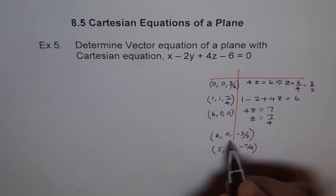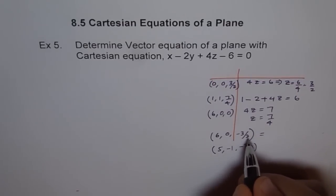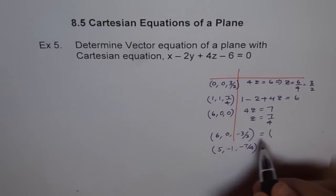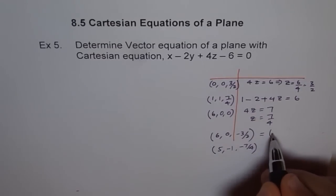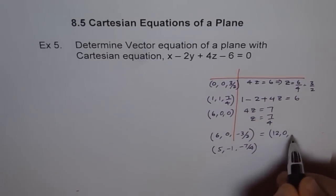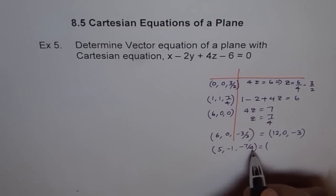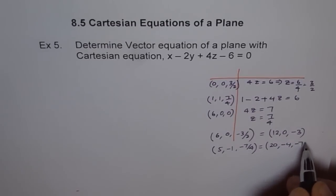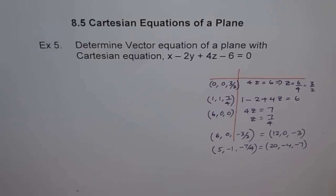Now, we could write this as, we will avoid fractions and we could write this as 2 times this. So, let us write down this as 2 times 6 as 12, 0 and minus 3. And this one will multiply by 4, and 4 times 5 is 20, and this is minus 4, and here we have minus 7. So we have got two direction vectors.